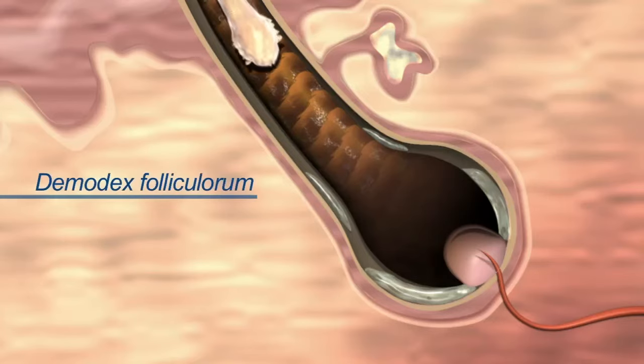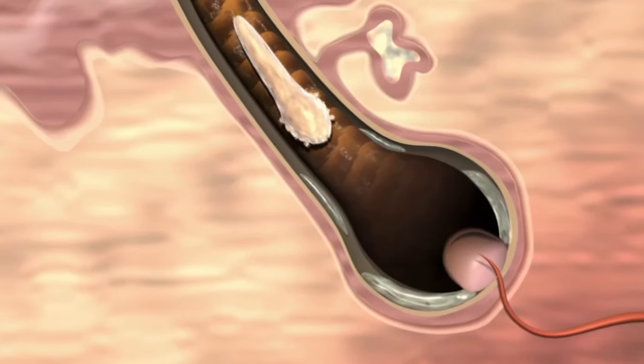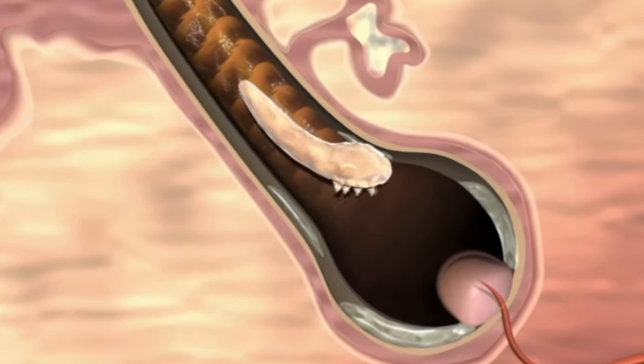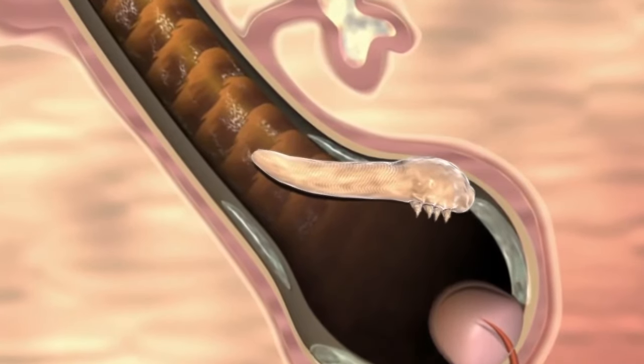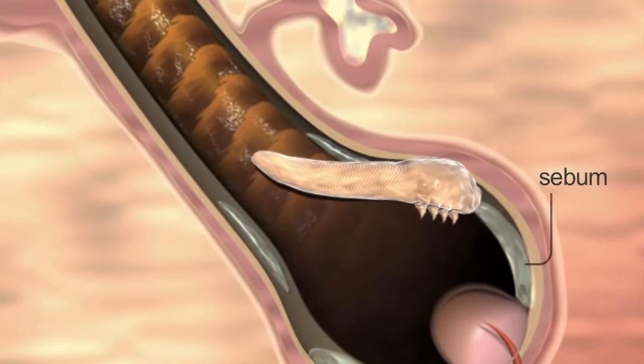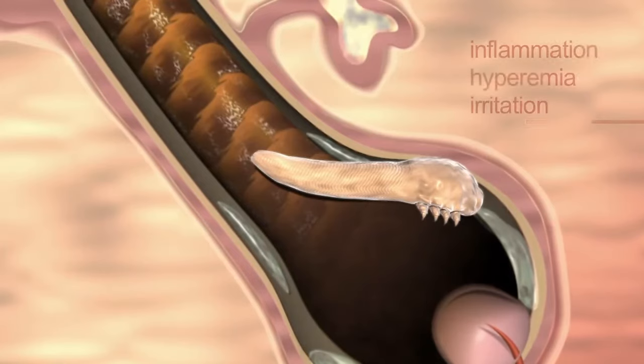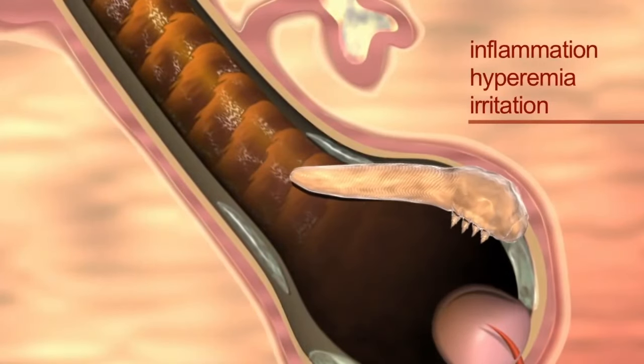Demodex folliculorum inhabits the eyelash follicles where they scrape the epithelial cell lining with their claws and excrete digestive enzymes to feed on the oily sebum deep in the follicle, causing inflammation, hyperemia, and irritation.